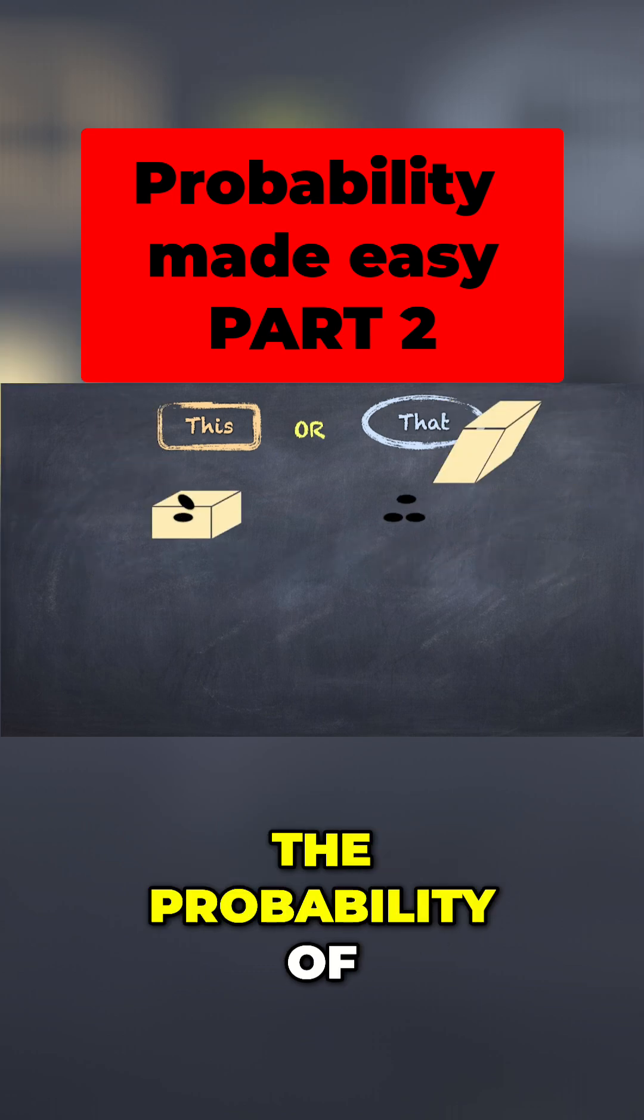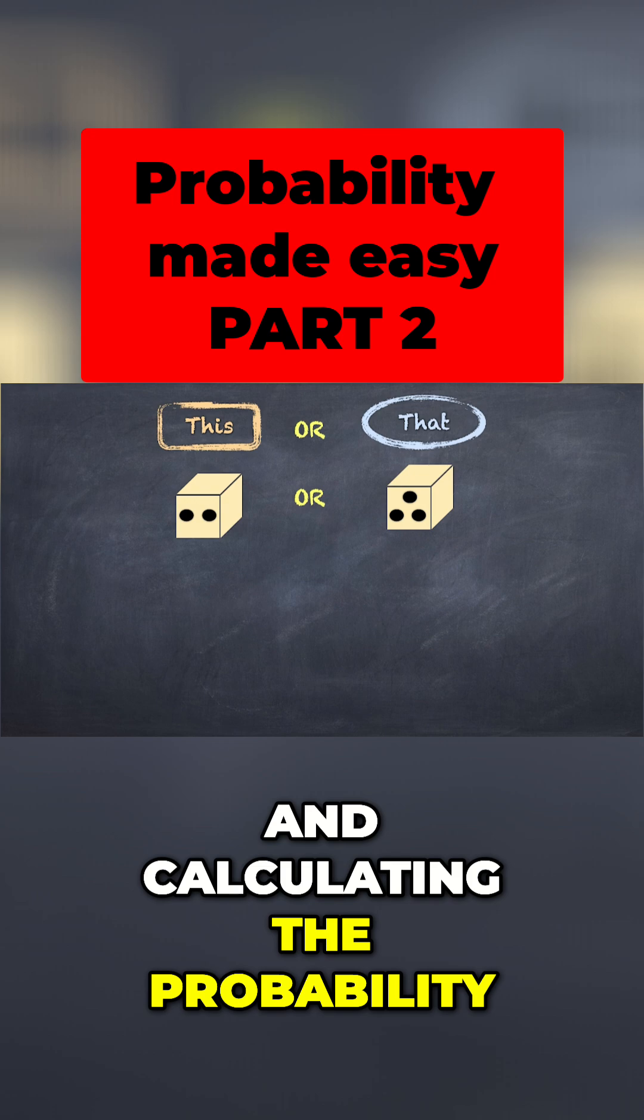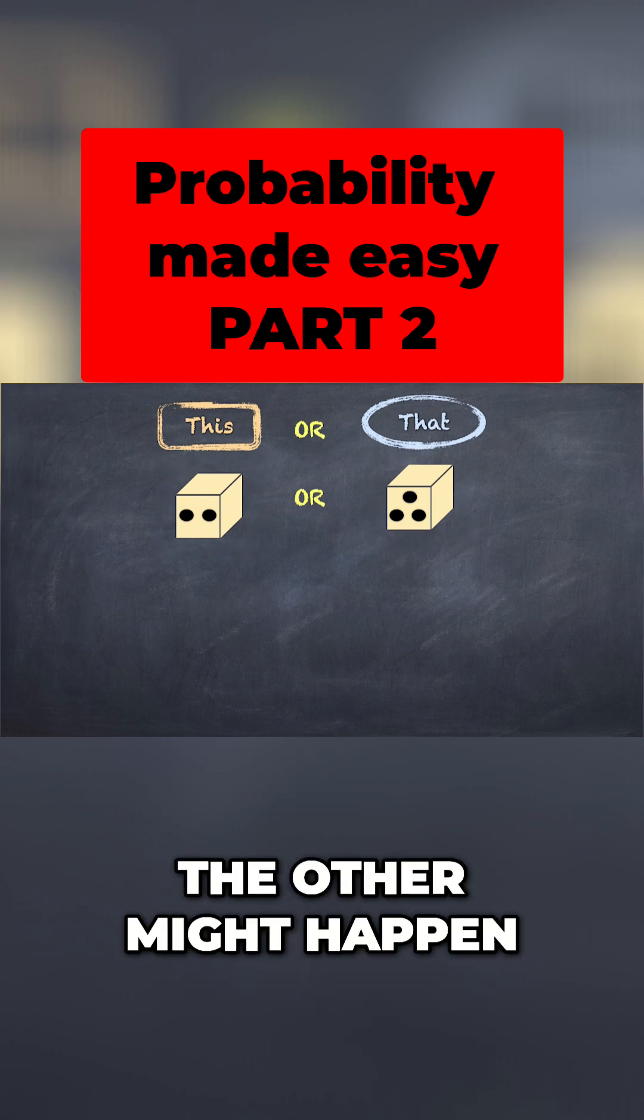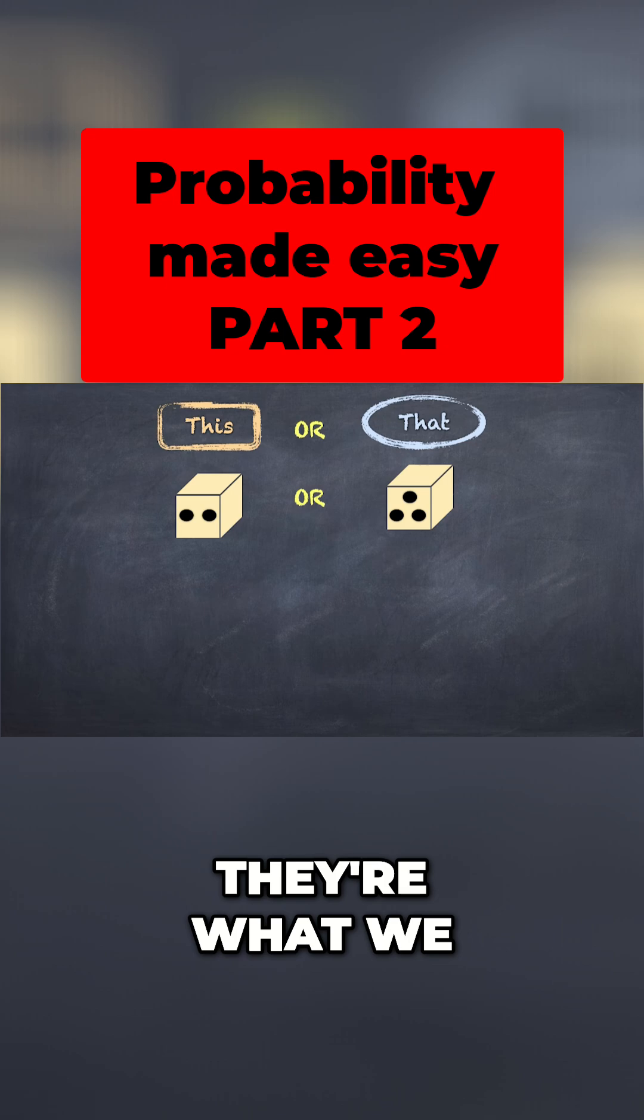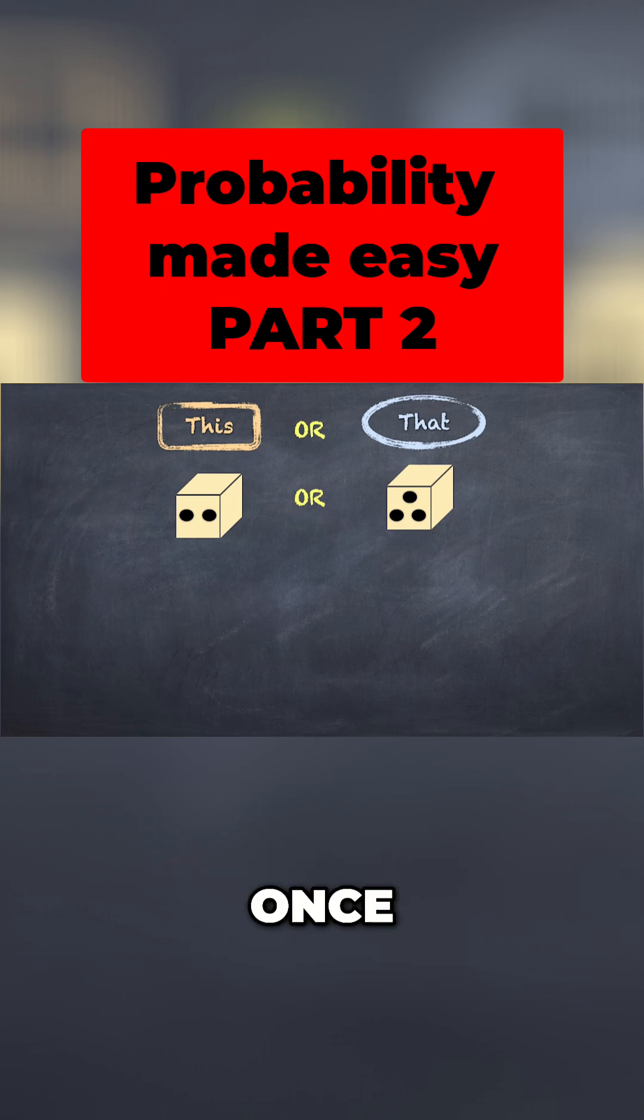But what about the probability of this or that happening? Let's think about throwing a dice and calculating the probability of throwing a 2 or a 3. Either one or the other might happen, but not both. They're what we call mutually exclusive. If one of them happens, the other can't happen because we're only throwing the dice once.